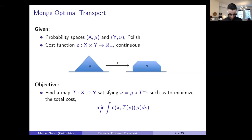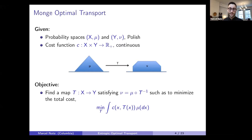For each transport map T we can compute the total transport cost: you go to each location x, pick up the grain of sand there, bring it to T(x), incurring cost c for that, and you integrate over the pile on the left to get the total cost associated with T. Then you minimize over all T's and pick the cheapest one — that's Monge's problem.